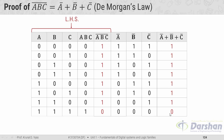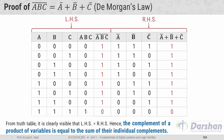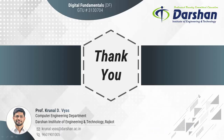From the truth table it is clearly visible that the LHS equals the RHS, proving that the complement of a product of variables is equal to the sum of individual complements. This is the statement of De Morgan's second theorem. Thank you.